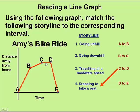So in other words, time is going by, but distance is not increasing. Let's think about what would happen if she was going downhill. We need to look for a very steep line where distance is increasing very quickly, but time is not. The steepest line we can find is the section from D to E.